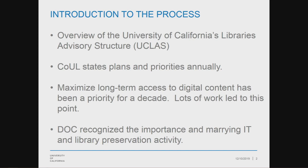Putting my administrator hat on — I often get questions about how we govern the University of California libraries. There are a couple of groups important to this discussion. Across the university we have an organization called UCLASS, which is the governance structure. At the top is the Council of University Librarians, or COOL. Supporting COOL is DOC, the Direction and Oversight Committee, which I sit on. DOC is a group of high-level administrators reporting to the university librarians, and our job is to take projects, plans, and goals from COOL and make those things happen. COOL states these plans and priorities annually.